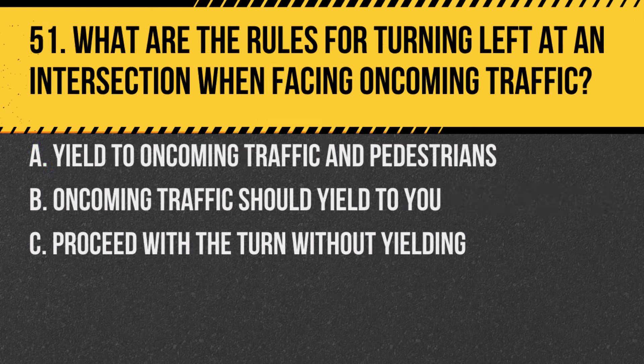Question 51. What are the rules for turning left at an intersection when facing oncoming traffic? A. Yield to oncoming traffic and pedestrians. B. Oncoming traffic should yield to you. C. Proceed with the turn without yielding. Answer: A. Yield to oncoming traffic and pedestrians. You must wait for a safe gap in oncoming traffic before turning.